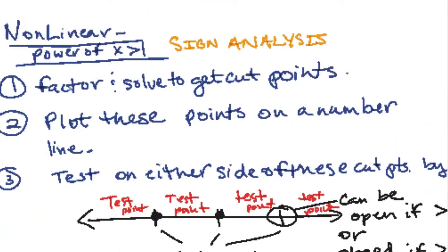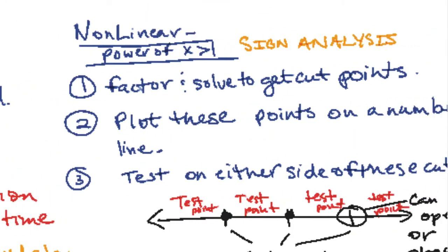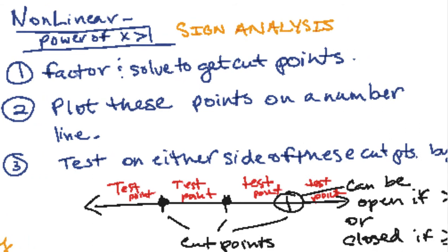The other type is non-linear of which we're first going to discuss the ones that have the power of x greater than 1. So like x squared minus 2x minus 15. First make sure it's less than 0. If there's anything besides the 0, move it over and then after that factor and solve and get your cut points. These cut points are going to be our main breaking points for our domain or our answers to these questions.